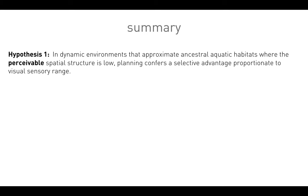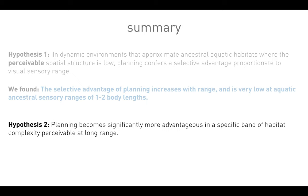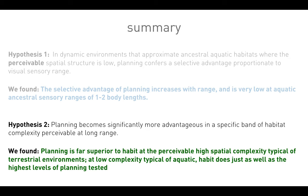Summary. Hypothesis one: in dynamic environments that approximate ancestral aquatic habitats where the perceivable spatial structure is low, planning confers a selective advantage proportionate to visual sensory range. We found that the selective advantage of planning increases with range and is very low at aquatic ancestral sensory ranges of one to two body lengths. Hypothesis two: planning becomes significantly more advantageous in a specific band of habitat complexity perceivable at long range. We found that planning is far superior to habit at the perceivable high spatial complexity typical of terrestrial environments. At low complexity typical of aquatic habitats, habit does just as well as the highest levels of planning we've tested.